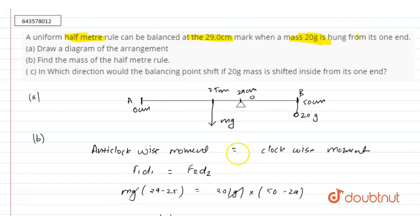In third part, we have to discuss about the balancing point shift if 20 gram mass is shifted inside from one end.